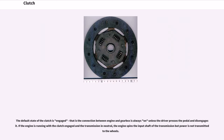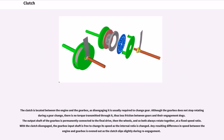The default state of the clutch is engaged — the connection between engine and gearbox is always on unless the driver presses the pedal to disengage it. If the engine is running with the clutch engaged and the transmission in neutral, the engine spins the input shaft of the transmission but power is not transmitted to the wheels. The clutch is located between the engine and the gearbox, as disengaging it is usually required to change gear. With the clutch disengaged, the gearbox input shaft is free to change its speed as the internal ratio is changed, and any resulting difference in speed between the engine and gearbox is evened out as the clutch slips slightly during re-engagement.